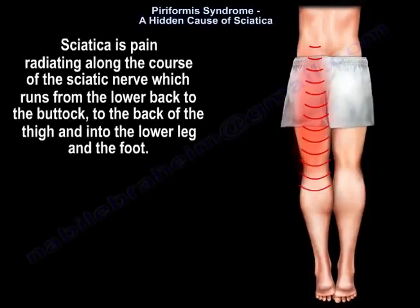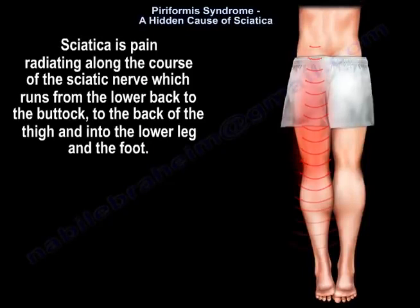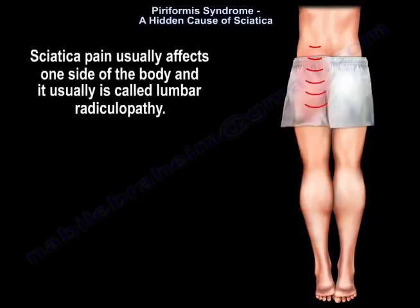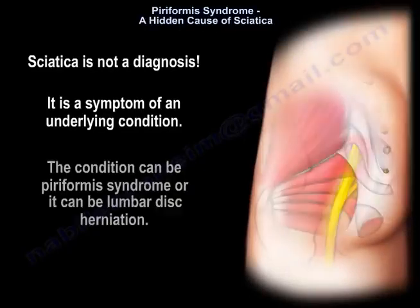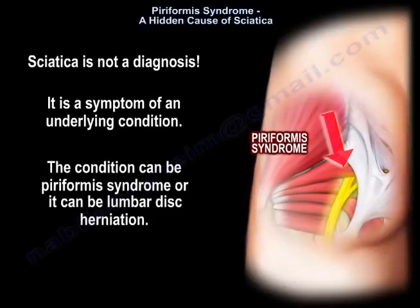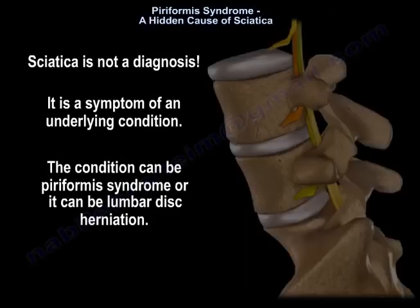Sciatica is pain radiating along the course of the sciatic nerve, which runs from the lower back to the buttock, to the back of the thigh, and into the lower leg and the foot. It usually affects one side of the body and is usually called lumbar radiculopathy. Sciatica is not a diagnosis — it is a symptom of an underlying condition, which can be piriformis syndrome or lumbar disc herniation.